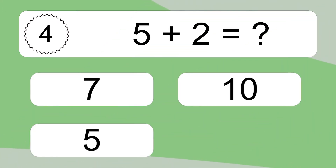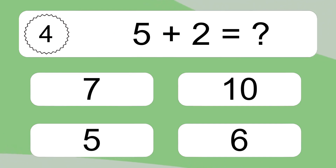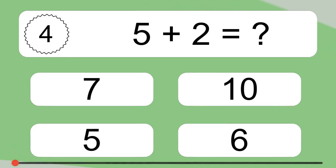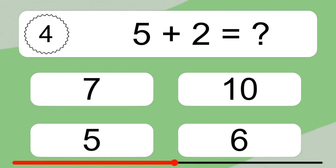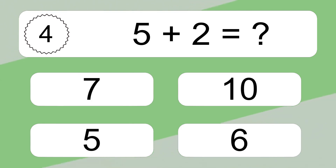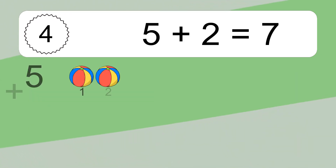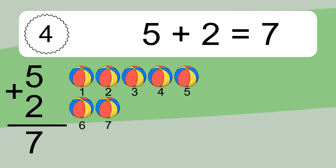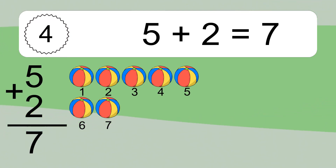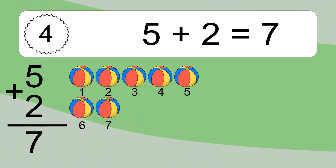5 plus 2 equals what? 5 plus 2 equals 7. Let's count it. 1, 2, 3, 4, 5, 6, 7.